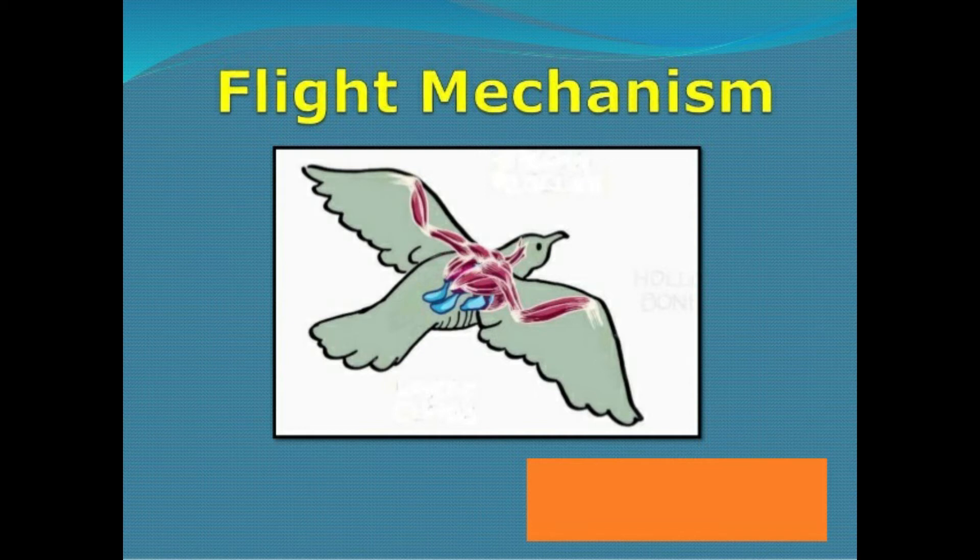The sternum is modified to form the keel. The keel is needed for the attachment of muscle. The body is covered with feathers which give the wings a large surface area to keep the bird in the air. They also keep the body warm so that the bird can produce enough energy to fly.